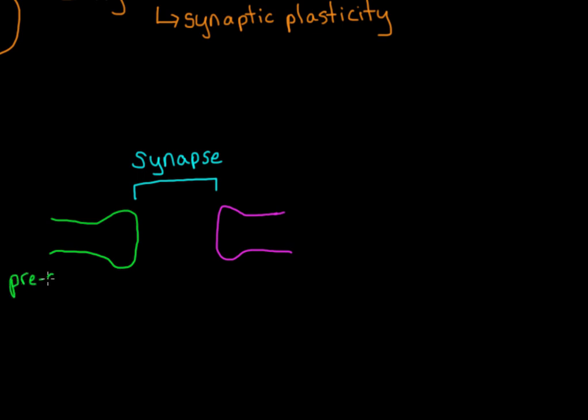So we have a presynaptic neuron, which is the neuron leading up to the synapse, and we have a postsynaptic neuron, which is the neuron immediately following the synapse.